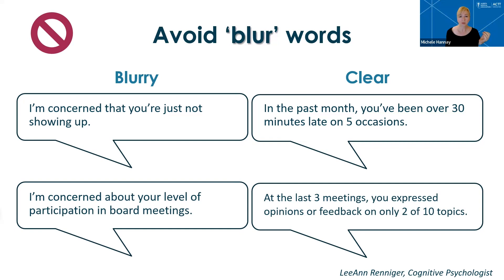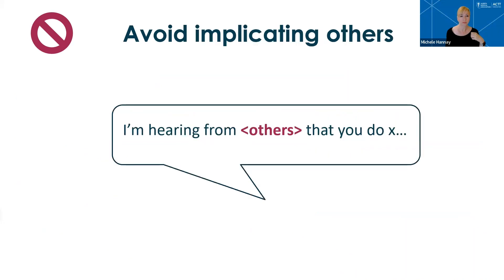This level of specificity is also helpful when giving positive feedback — not just "great job," but something specific like "I really appreciated how you came to me with options for solutions, not just a problem." Another thing to avoid is implicating others in feedback. When someone hears that others have been talking about them, their limbic system will quickly kick in, meaning they won't be able to listen openly or think creatively. It also builds distrust and erodes psychological safety in the group. So it's best to keep feedback to what you've personally observed whenever possible, rather than saying "I'm hearing from others that you do X."